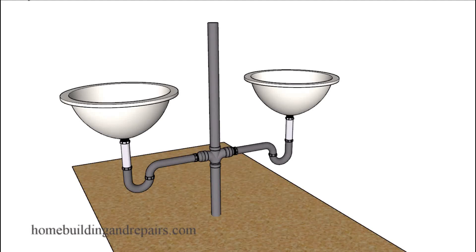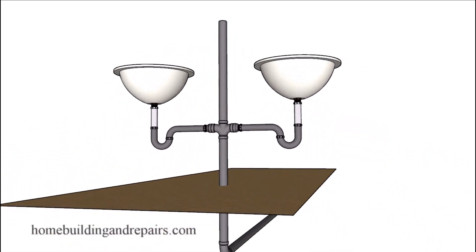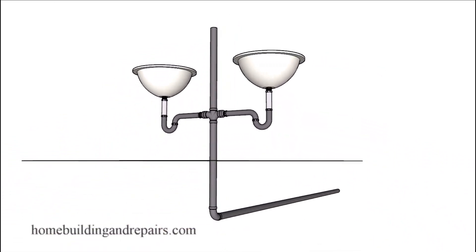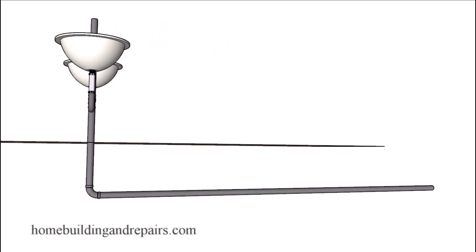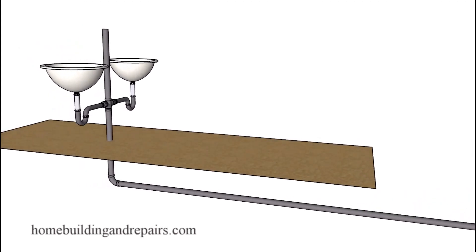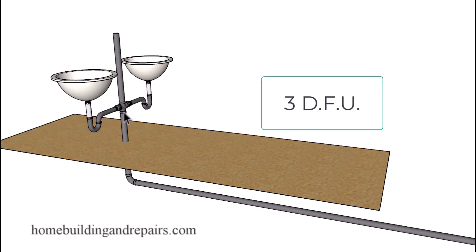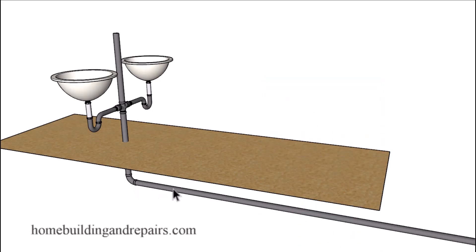In this video I will provide you with something that you might not be aware of — the fact that you can install more drainage fixture units on a pipe that is sloping more. Even though it doesn't make any difference for a one and a half inch pipe, which allows a maximum of three fixture units whether the pipe is sloping a quarter of an inch or a half inch per foot. This means the pipe will be dropping down vertically a half inch for every one foot, or 12 inches, the pipe travels horizontally.